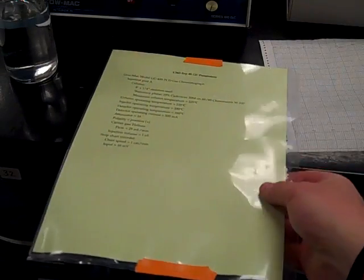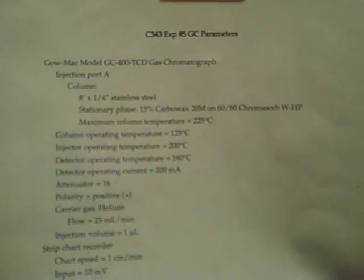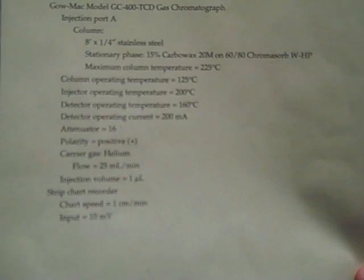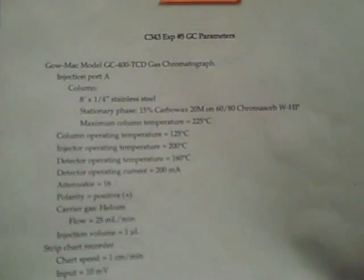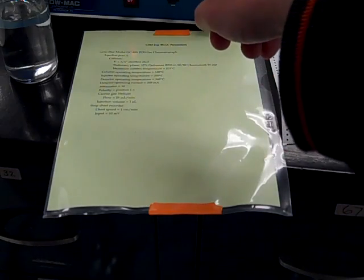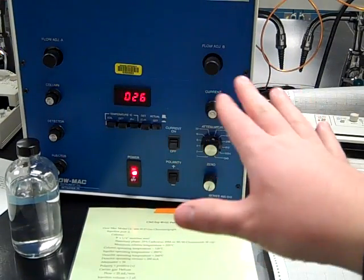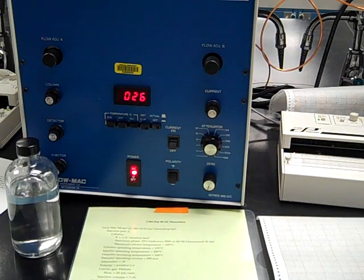Also don't forget to record the parameters used by the GC in Experiment 5. All these parameters should go in your procedure, and notice that a lot of the parameters correspond to what's up on a lot of these buttons. So you don't need to touch those, those have already been preset, and you should just have to write it down in case you needed to reproduce your experiment.